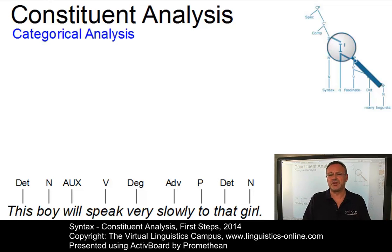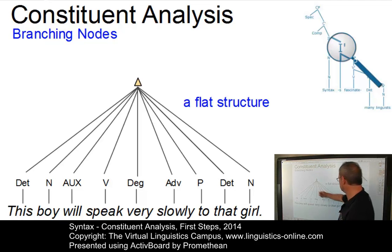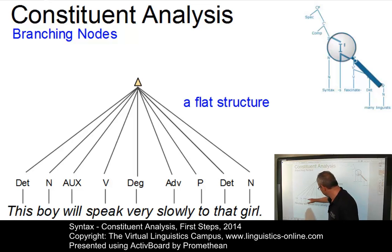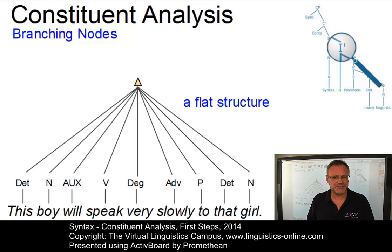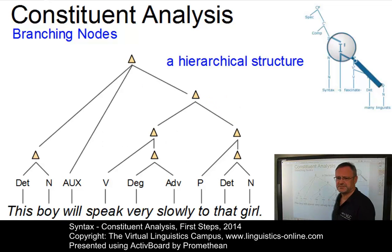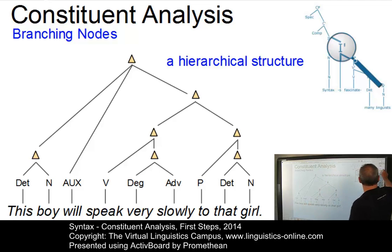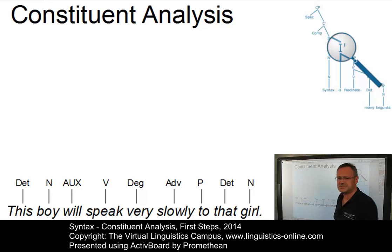This categorical, or word class, or part-of-speech analysis is always the first step. Now we are ready to build constituents, and we have several theoretical possibilities. On the one hand, we could opt for a really flat structure — one constituent associated with all the other nodes. Here the branching node on top dominates all other terminal nodes. Since a flat structure misses many generalizations and does not show real hierarchies, modern syntactic theories all use a hierarchical structure with several intermediate constituents.